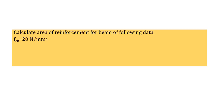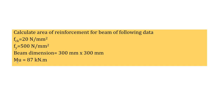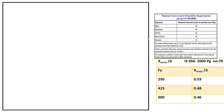This is the data for the beam: fck, fy, and the dimension of the beam is 300×300. The applied moment is 87 kilo-newton meters. The nominal cover requirement is as per the exposure condition given in IS 456 code, and the value of xu,max/d is also given as per IS 456.